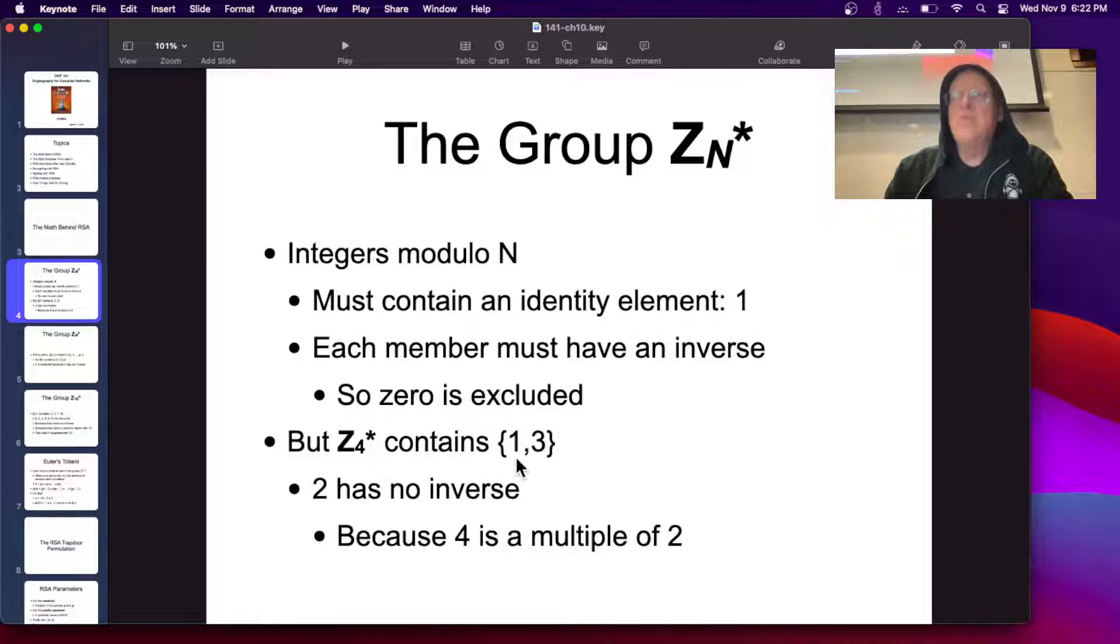So Z4 contains 1 and 3 only. It would contain 1, 2, and 3, all the numbers from 1 up to 4, but not including 4. But it doesn't include 2 because 4 is a multiple of 2. So if you take 2 and 2 squared and 2 cubed, you just keep getting 2 over and over, 2 and 4 over and over. So 2 has no inverse. So the group of the numbers up to 4, the list of numbers up to 4 contains 3 elements, but the group up to 4 contains only 1 and 3.